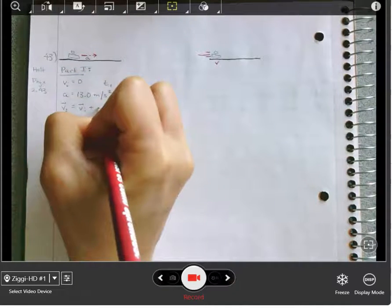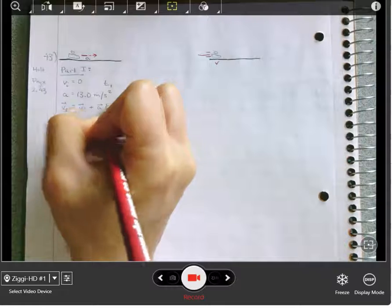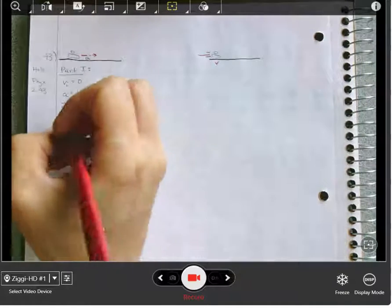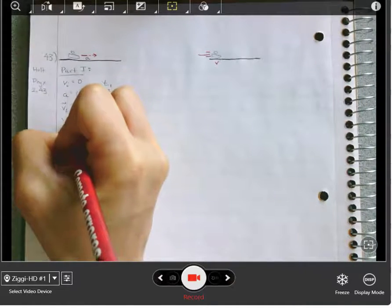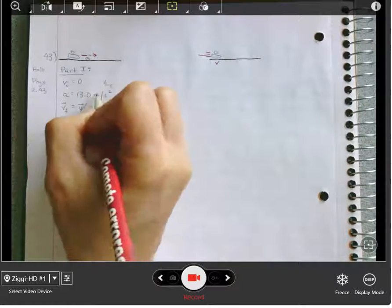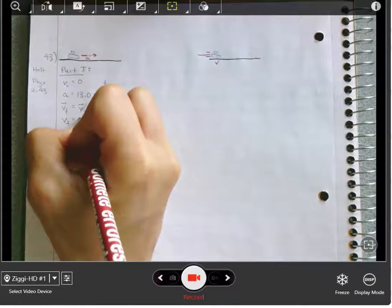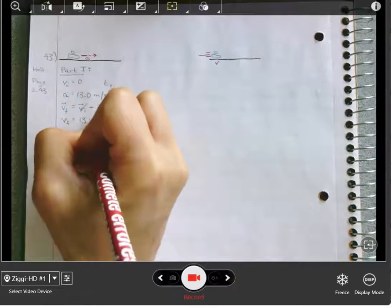Check direction. Everything's in the forward direction. There's no initial velocity. So our final velocity here is going to be our known acceleration times t1.